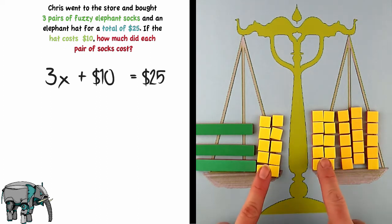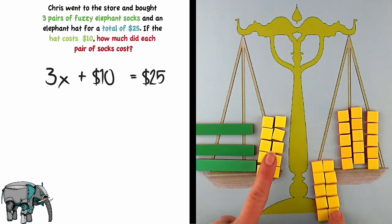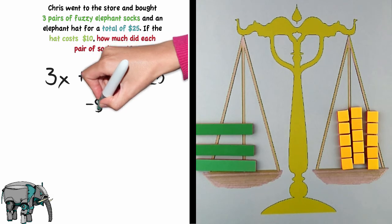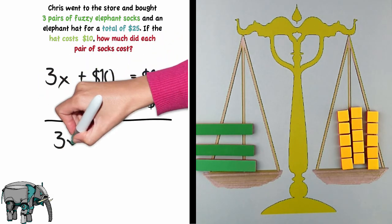To solve this problem I want to get the variable by itself. So I am going to need to remove 10 tiles from each side of the scale because we always need to keep that scale balanced. If I was to do this on paper I would subtract 10 dollars from each side of the equation. This would give me 3x is equal to 15.